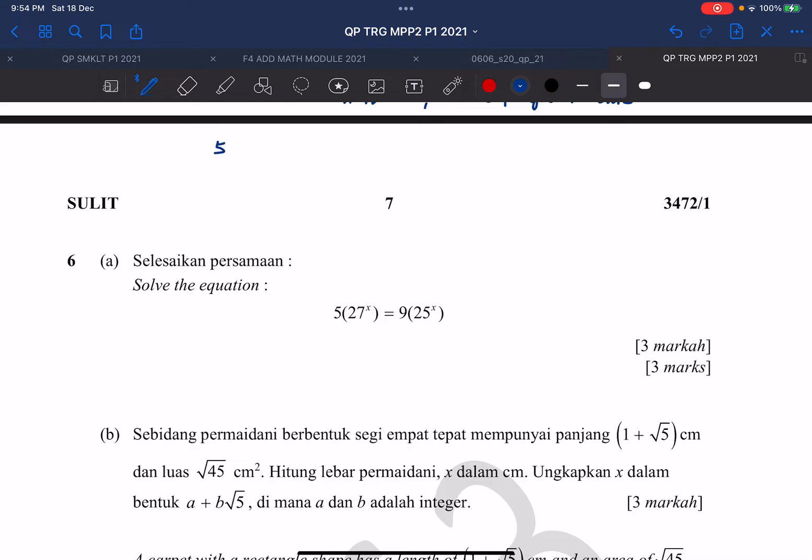So I'll write it as 5, 3, 27 I'll write it as 3 cube, x equals to 9 I'll write it as 3 square, and 25 I'll write it as 5 square.